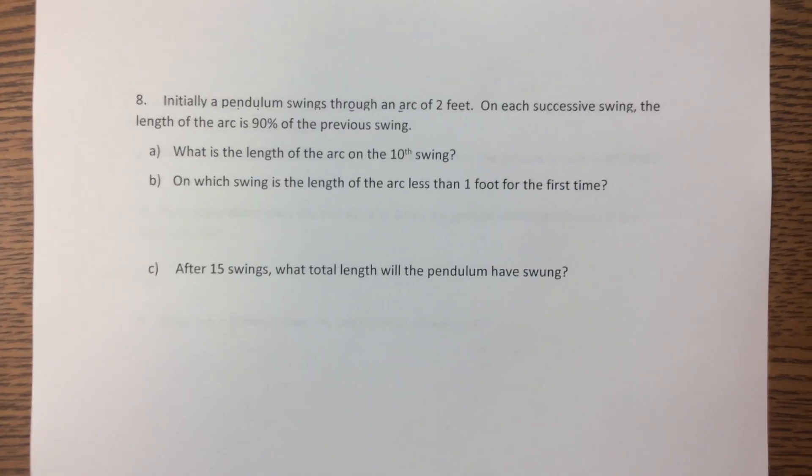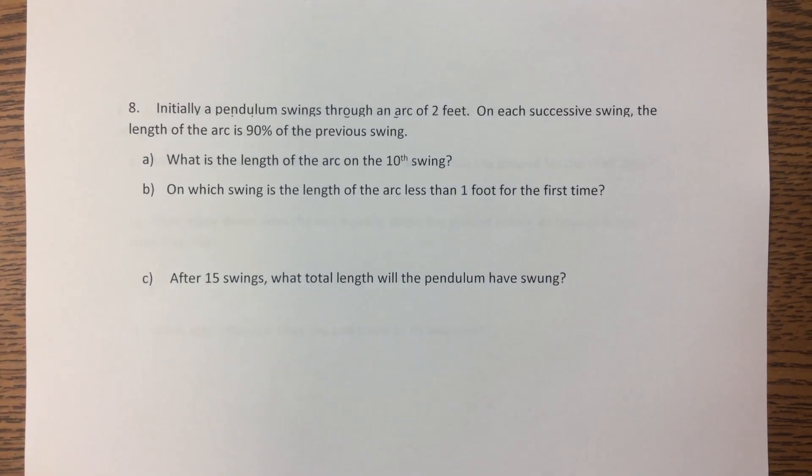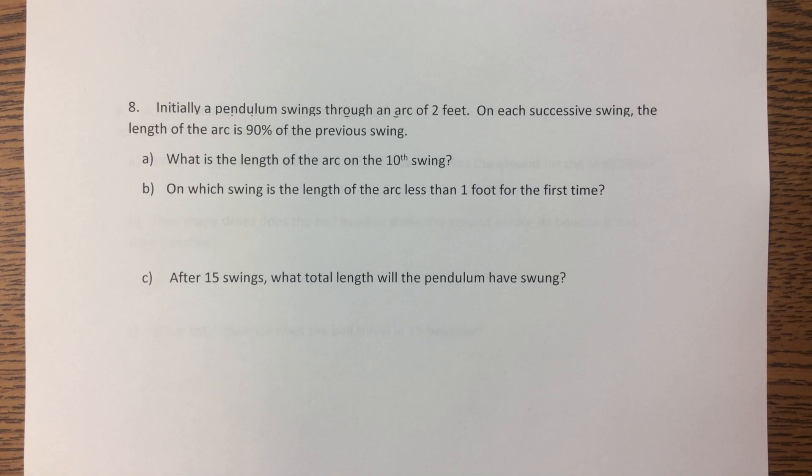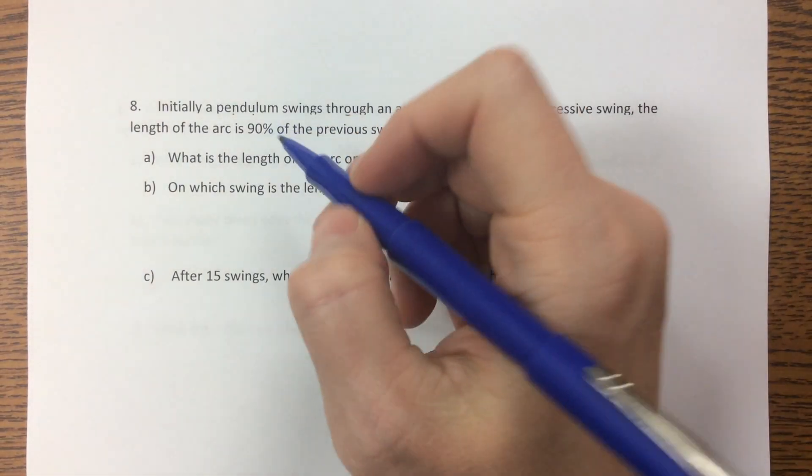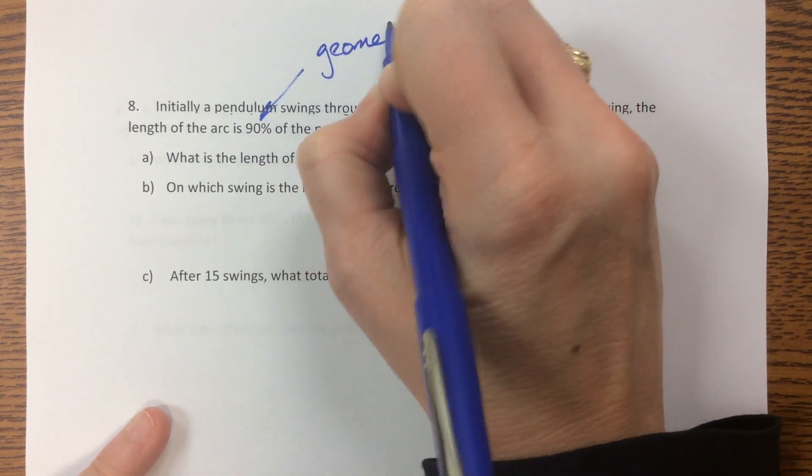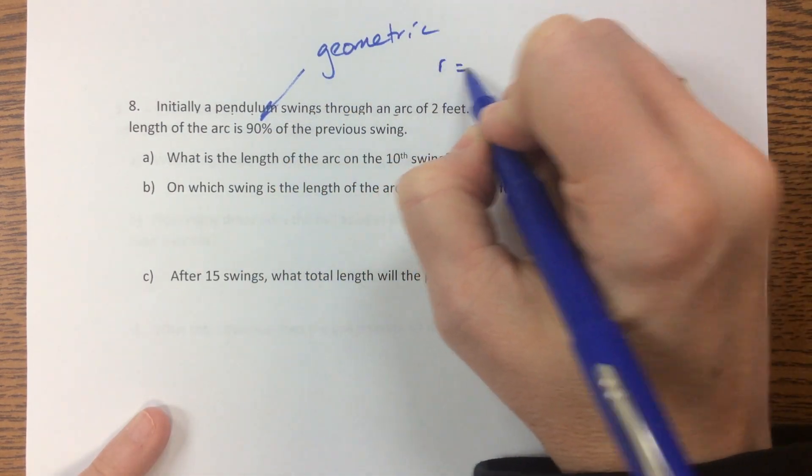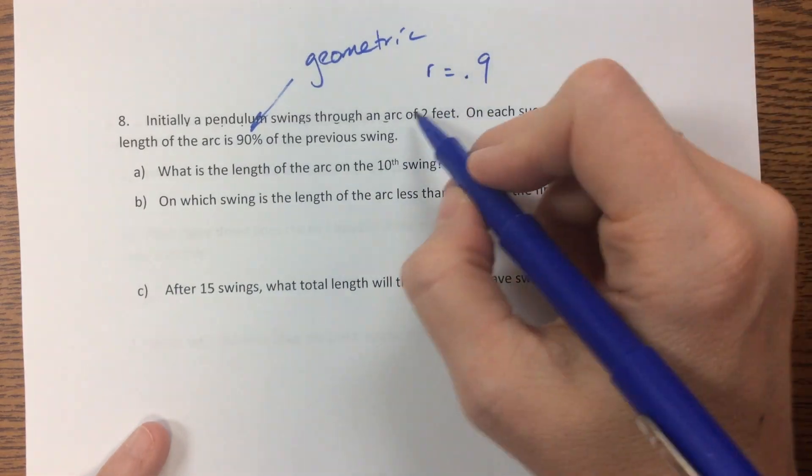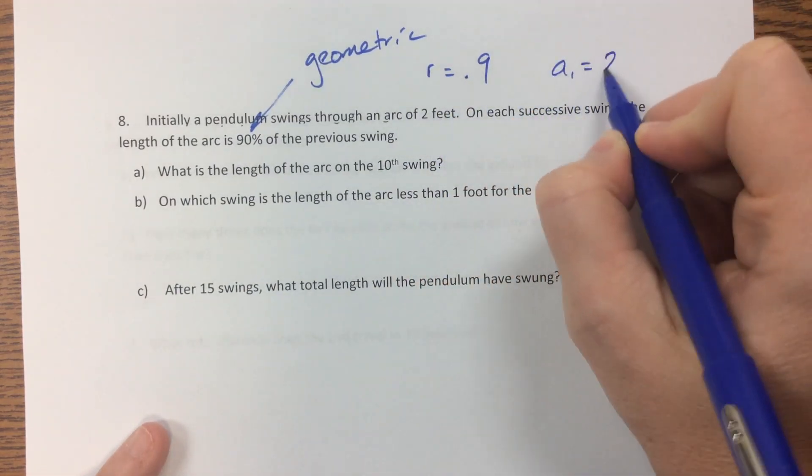Okay, so back to the math problem. On this one, we have a pendulum swinging through an arc of 2 feet. On each successive swing, the length of the arc is 90% of the previous swing. So what's the length of the arc on the 10th swing? When we look at 90% of, this tells us we're multiplying. So this tells us it's geometric, and our r value is 0.9. Our first swing is 2 feet.